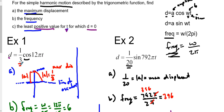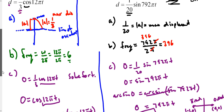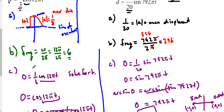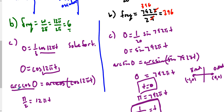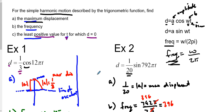To summarize: maximum displacement is our A value, our amplitude. For frequency we use W over 2π (or B over 2π). For finding when distance equals zero, use inverse trig — arc cosine of 0 gives π/2, arc sine of 0 gives 0 or π — then solve for T. I hope this helps with harmonic motion application problems. Good luck!